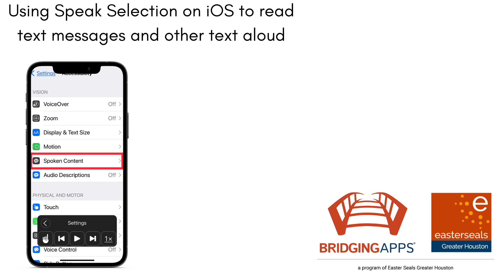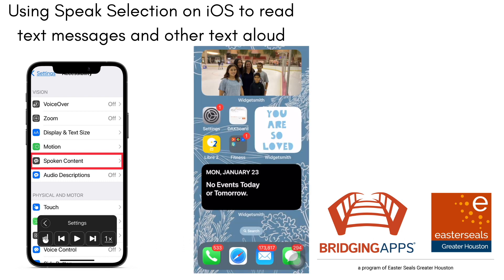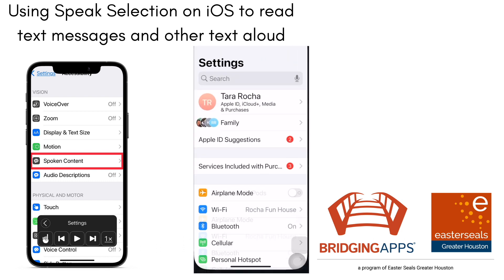This is Tara at Bridging Apps and we're going to show you how you can use Speak Selection, which is a feature in accessibility on iOS to read text messages and other text found on your phone aloud. Let's get into it.